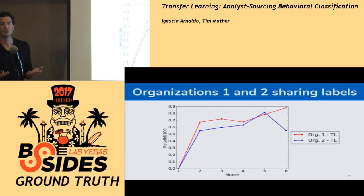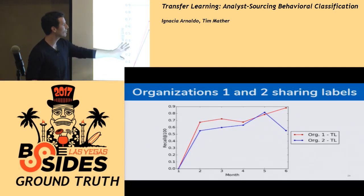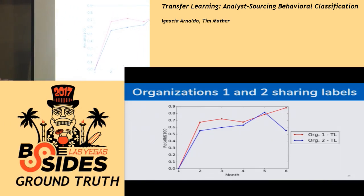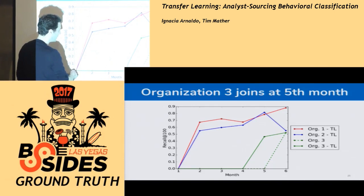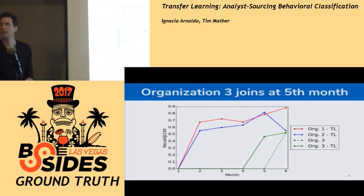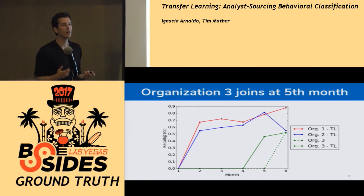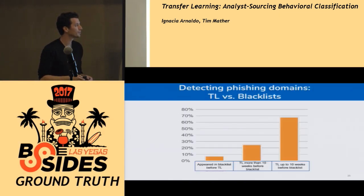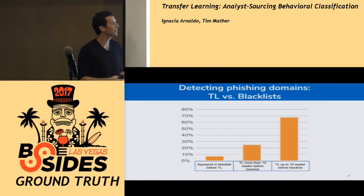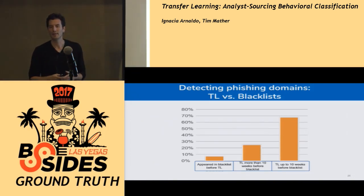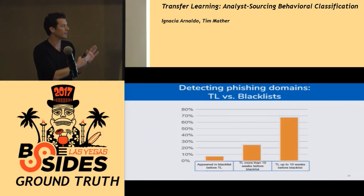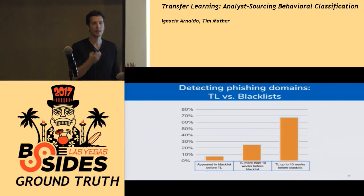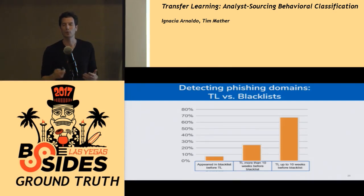When a third organization joins the network five months in — while the other two have already been sharing information — the new organization doesn't start at zero as the others did; it starts at 0.5. So even without having detected any attack at their own organization, just by getting data from the others, they can immediately be detecting 50% of attacks. In a comparison of when we were finding these bad domains versus when they appeared on blacklists, we found a median lead time of about 10 weeks — because the domains had a very clear pattern that classifiers could spot quickly, whereas a human has to manually examine, analyze, and then update those lists.